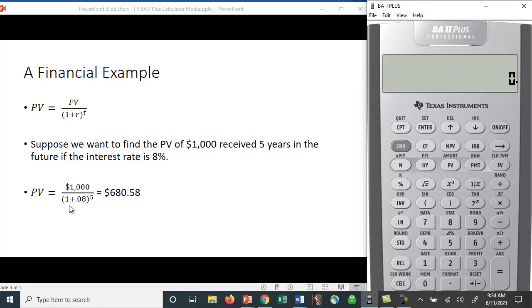I used to do it this way: 1.08 raised to the fifth power. To raise it to a power, we hit the y^x key, fifth power. This is what's in the denominator. Then I would use the 1/x key and flip it over, and multiply it by the thousand, because I didn't want to be bothered putting in parentheses. I don't have to do that now.